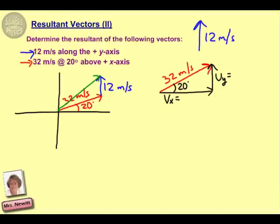We'll start with the x-component, and the x-component would be the cosine, or the adjacent side. So the cosine of 20 degrees is equal to the adjacent side over the hypotenuse, which is 32 meters per second. And that gives us an x-component of 30.1 meters per second.